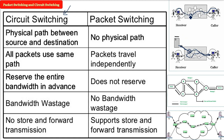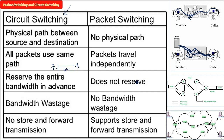In circuit switching, if something breaks, the connection breaks. In packet switching, if some portion goes down, packets will take a different route. In circuit switching, because the permanent path is established, we can reserve the entire bandwidth in advance. In packet switching, bandwidth is not reserved because different routes can be taken independently.